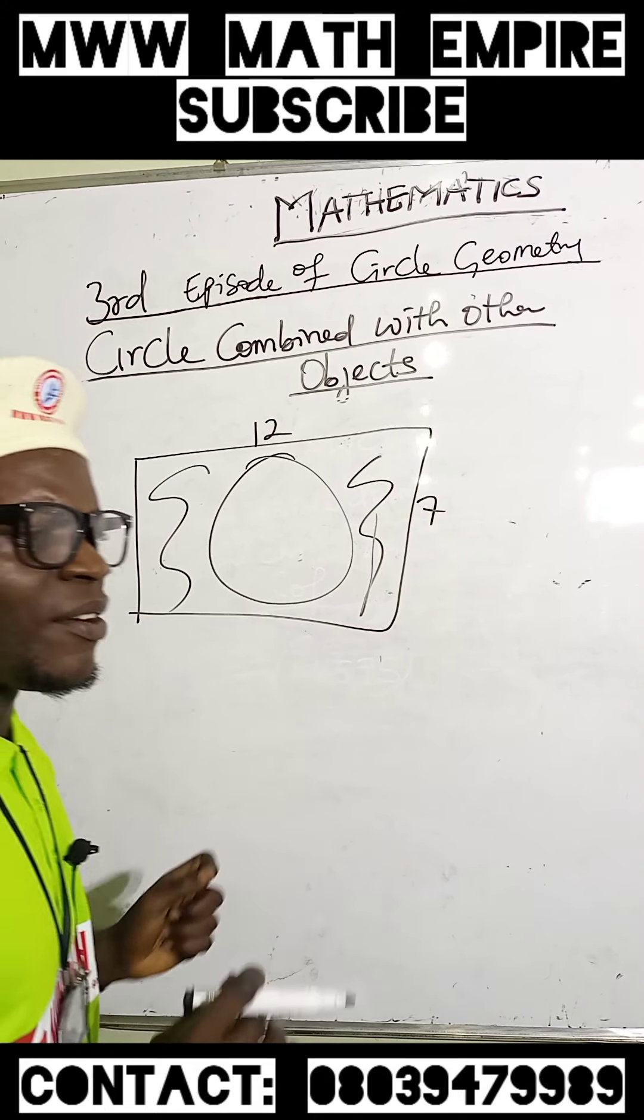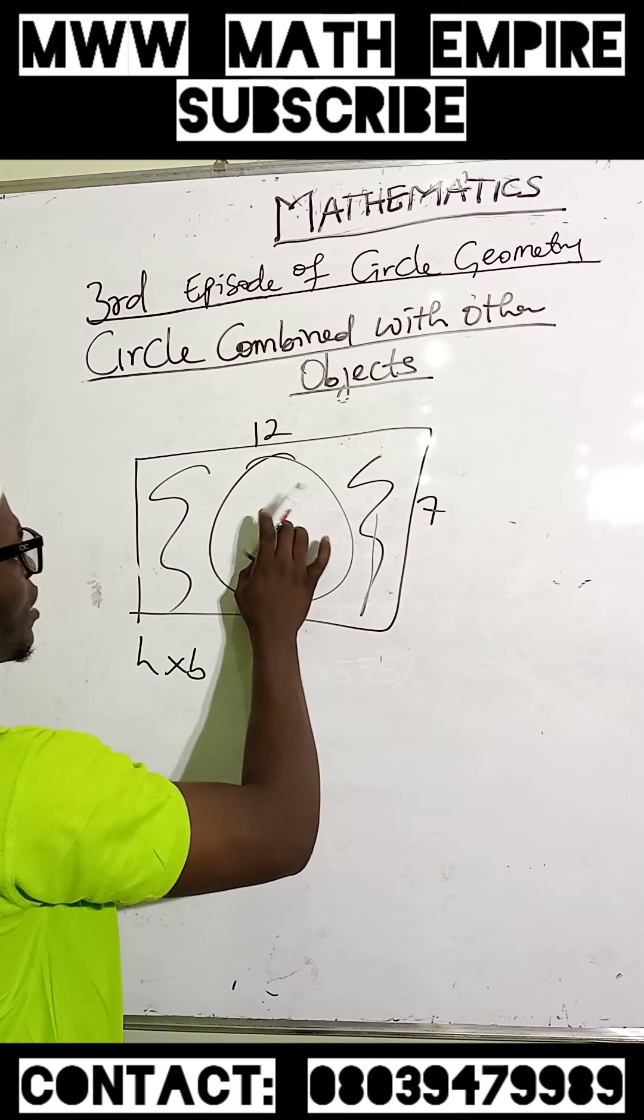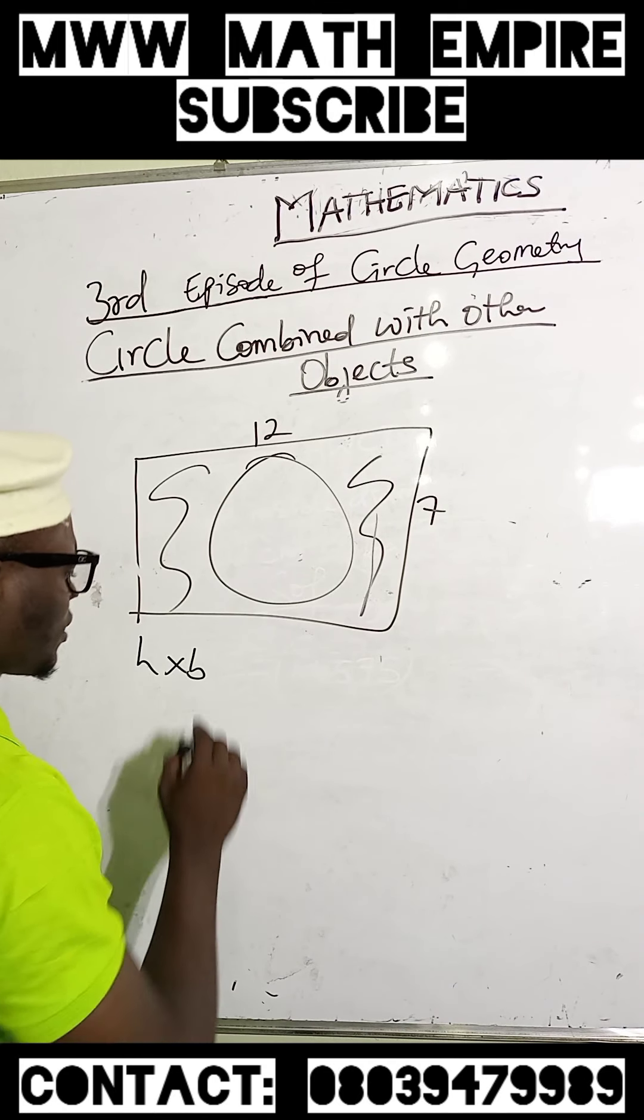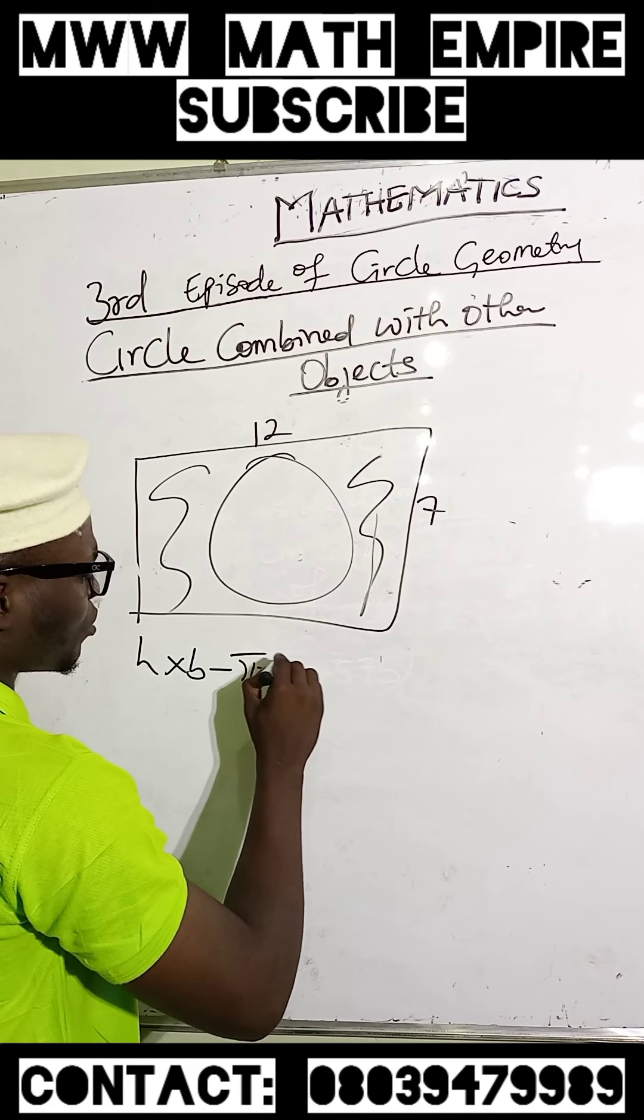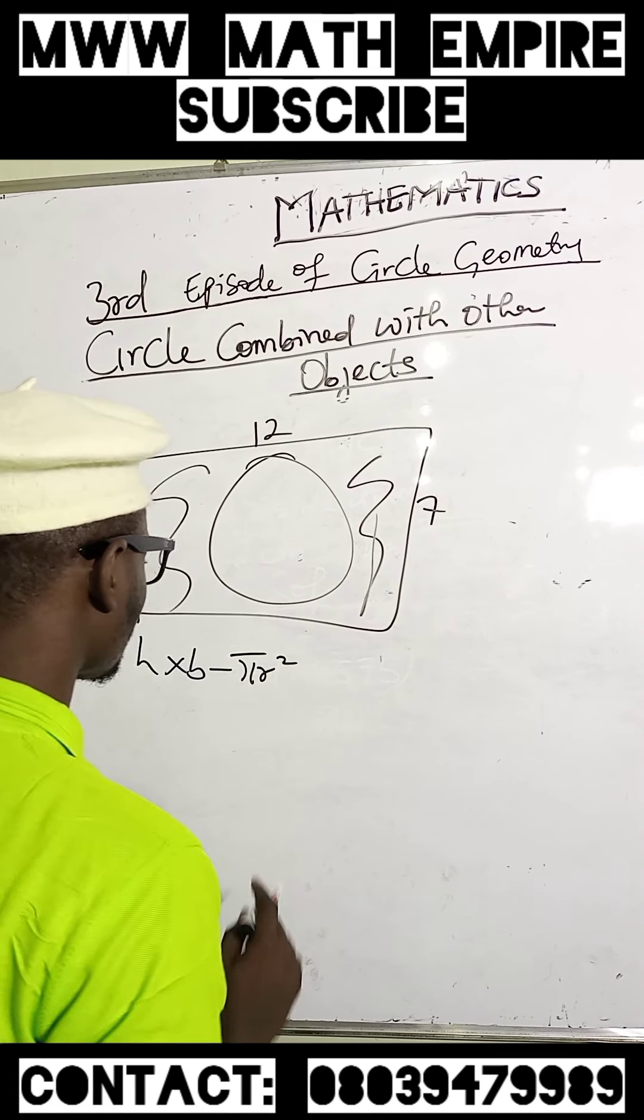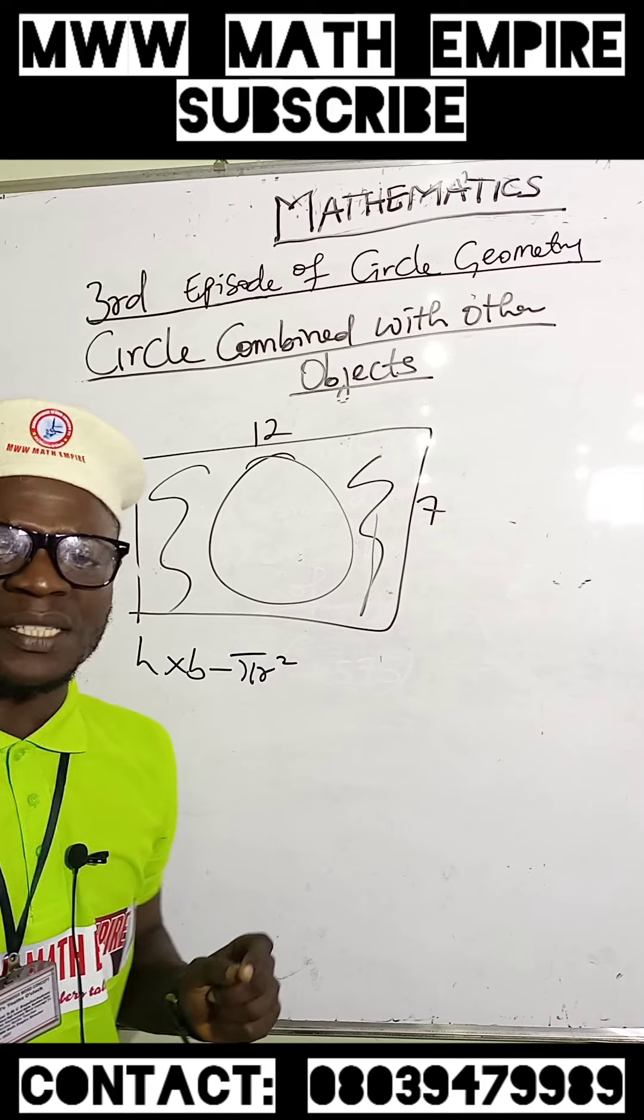Now, what is the area of a rectangle? What is the area of a circle? We have pi R squared. This is the formula we use.